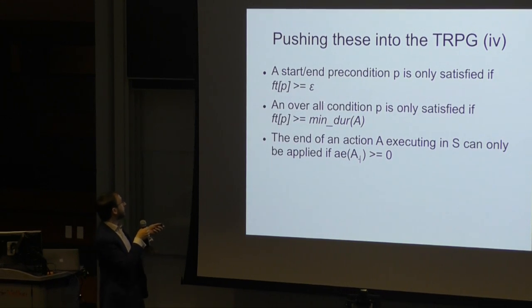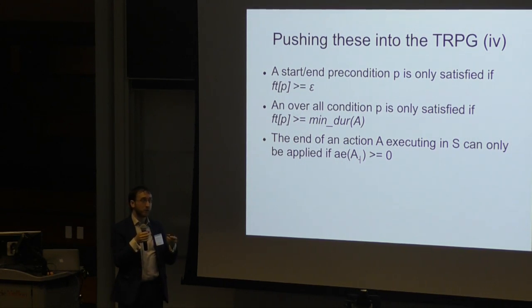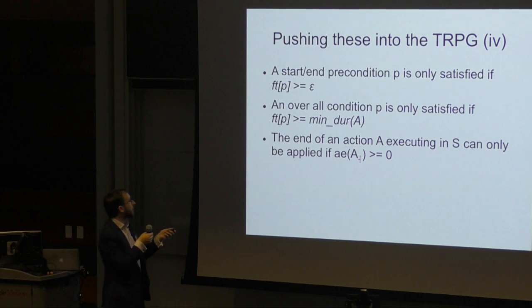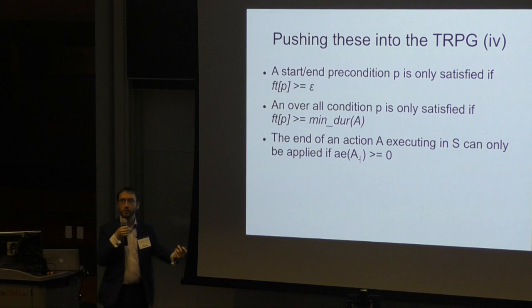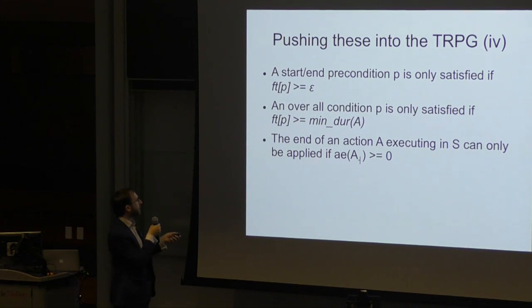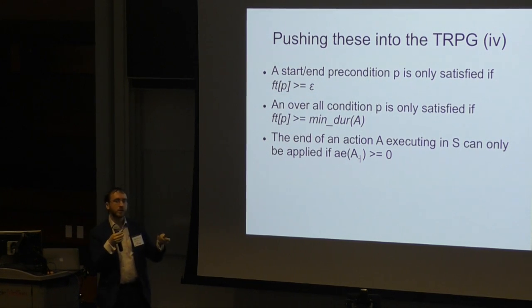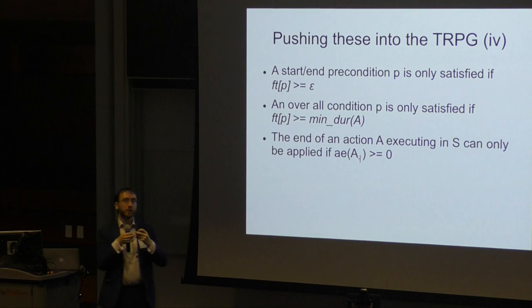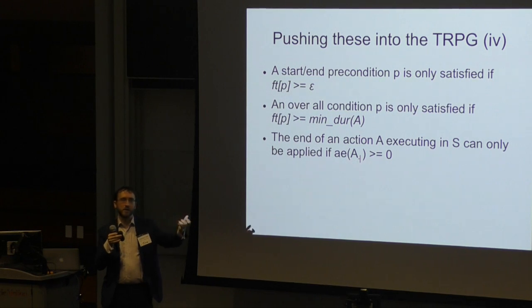And then pretty simply, if you want to use a fact as a precondition, if it's a start or end precondition it has to have at least epsilon left on it. For an overall condition, you have to have at least the minimum duration of the action left on it. And then I haven't talked as much about this, but if you need to achieve the preconditions on the end of an executing action, you cannot have a negative amount of time left by the time that appears in the planning graph. Otherwise, essentially you've shown that it's taken too long to reach the preconditions of our actions and it's a dead end state.